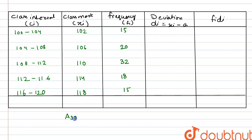The frequency given in the data is 15, 20, 32, 18, and 15. We have to assume a mean, the assumed mean a, which is basically the median of the class marks. Here it is 110.